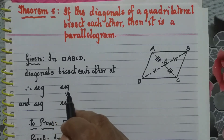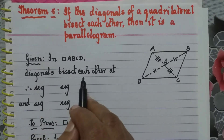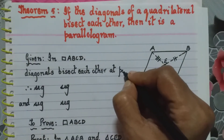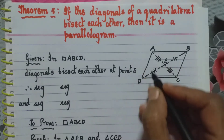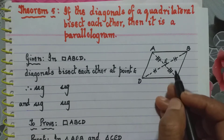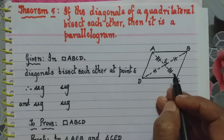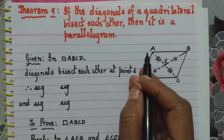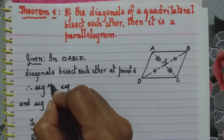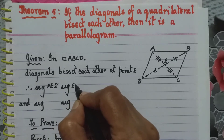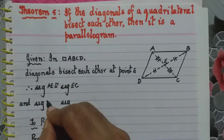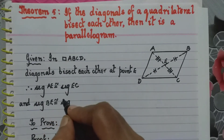When we write the given contents, we write: in quadrilateral ABCD, diagonals bisect each other at point E. If they meet at point E and the diagonals are bisecting each other, then the individual parts of each diagonal are congruent to each other. That is, in diagonal AC, segment AE is congruent to segment EC. And in diagonal BD, segment BE is congruent to segment ED.